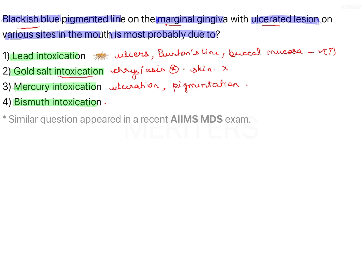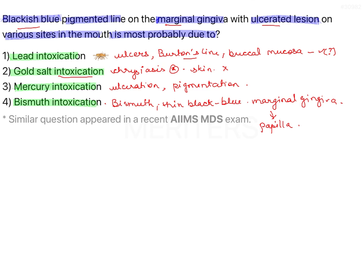The last option is bismuth intoxication. Bismuth and lead have very similar clinical presentations — just as there is a Burton's line in lead, there is a bismuth line in bismuth intoxication. It is a thin black-blue line found mainly on the marginal gingiva; it may extend to the interdental papilla and can sometimes also cause pigmentation of the buccal mucosa, lips, or tongue.